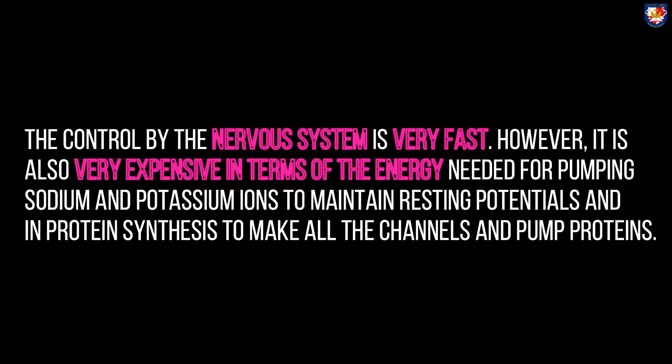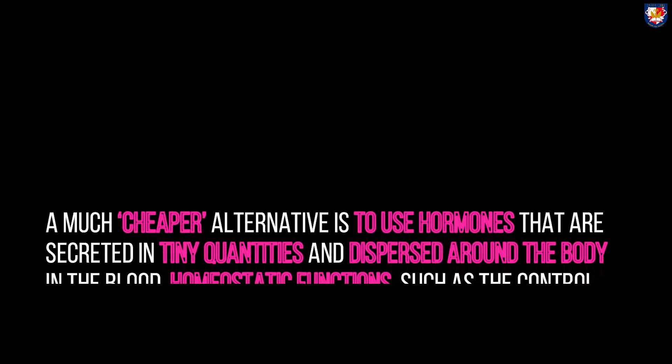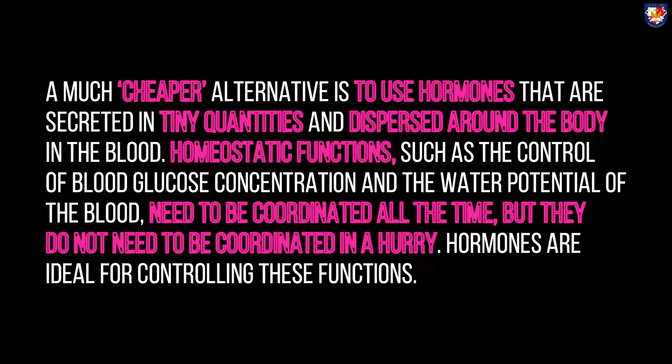Hormonal communication: control by the nervous system is very fast, but it is also very expensive in terms of energy needed for pumping sodium and potassium ions to maintain resting potential, and for protein synthesis to make all the channel and pump proteins. A much cheaper alternative is to use hormones, which are secreted in tiny quantities and dispersed around the body in the blood. Homeostatic functions such as the control of blood glucose concentration and water potential of the blood need to be coordinated all the time, but not in a hurry — hormones are ideal for controlling these functions.